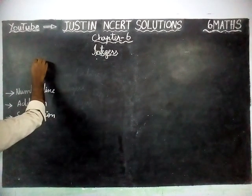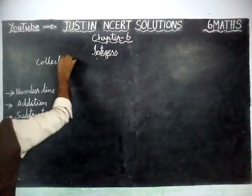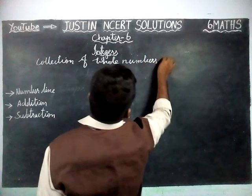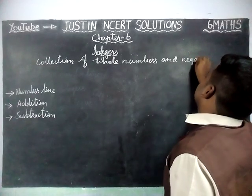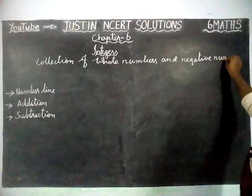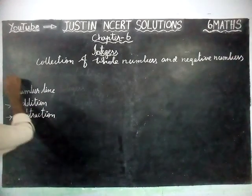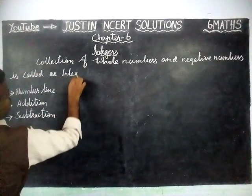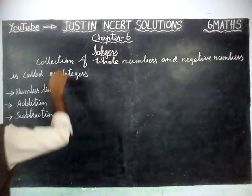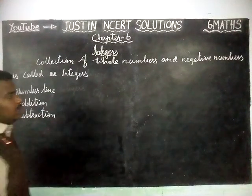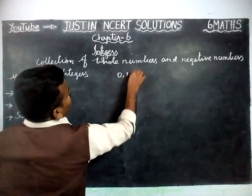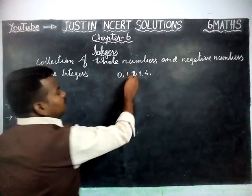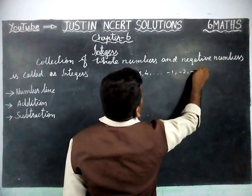We are going to see the explanation for integers. A collection of whole numbers and negative numbers is called integers. Whole numbers are numbers from 0, 1, 2, 3, 4, etc. And negative numbers — the opposite of positive numbers — are called negative numbers. For example, minus 1, minus 2, minus 3, etc.